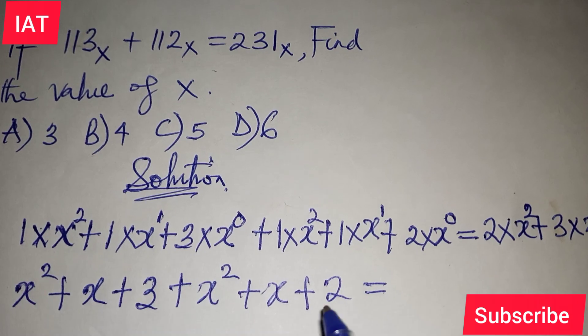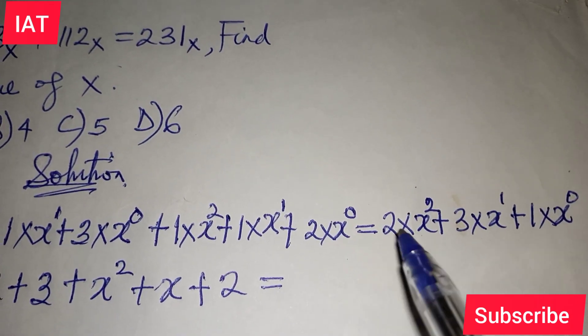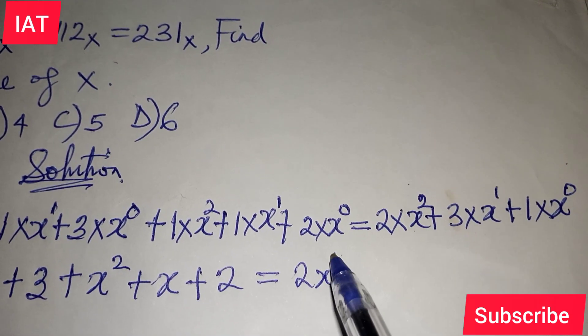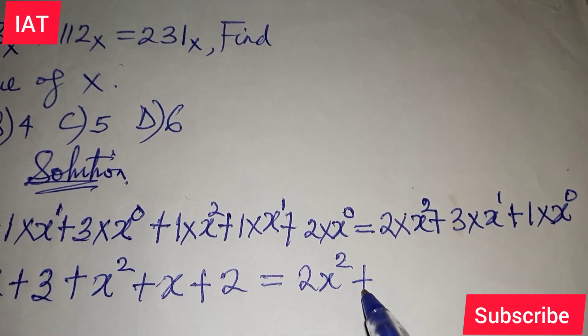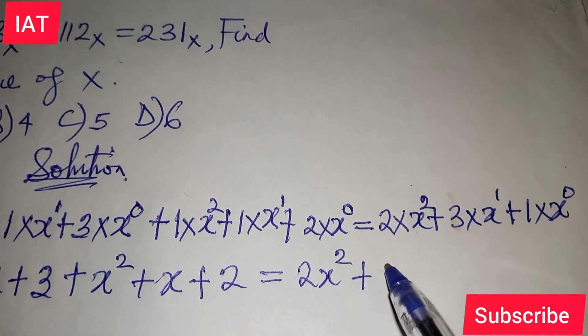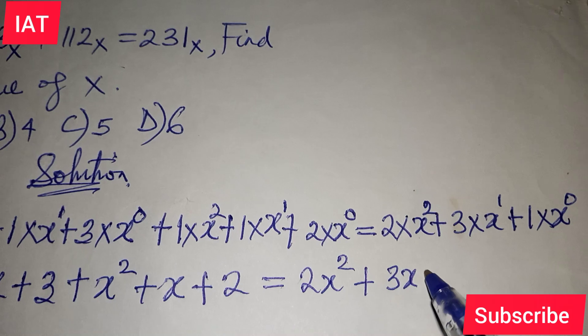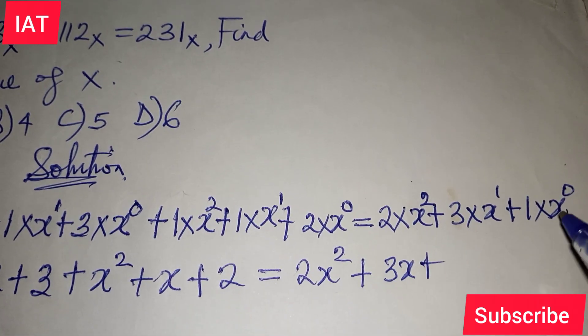That's the left-hand side. The right-hand side becomes 2 times X squared, which is 2X squared, plus 3 times X, which is 3X, plus 1 times 1, which is 1.